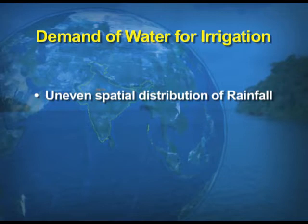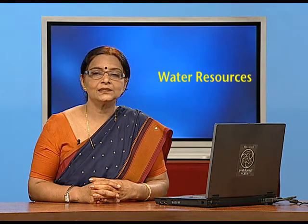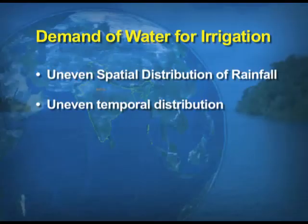The spatial distribution of rainfall is very uneven in the country — all areas do not receive the same amount of water. The second factor for the demand of irrigation is uneven temporal distribution of rainfall. India receives rainfall through the monsoons, so the time and amount of rainfall is not at all fixed. Therefore, we have to depend upon irrigation.